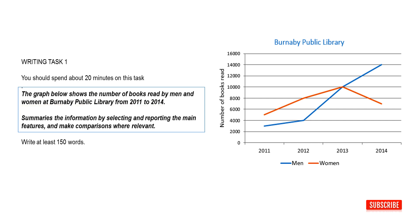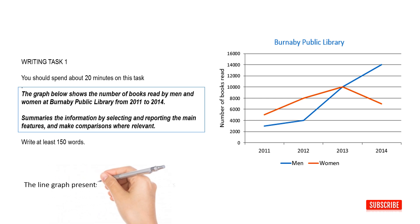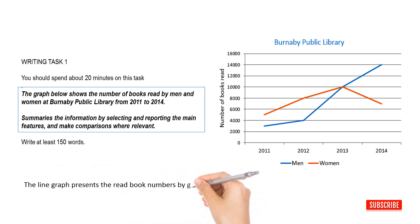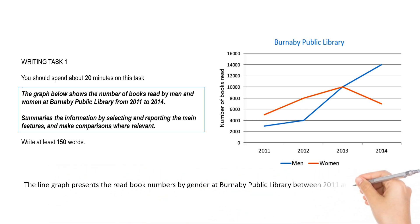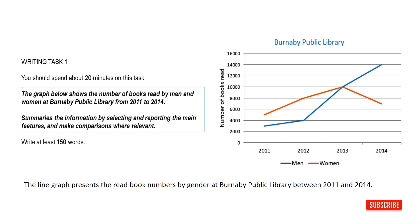Now let's get started to respond to the task. The first paragraph you will write is an introduction. For the introduction, you need simply to paraphrase the information from your topic. Here is how I wrote it: 'The line graph presents the read book numbers by gender at Burnaby Public Library between 2011 and 2014.' As you can see, I added the specific name of the graph — line graph.